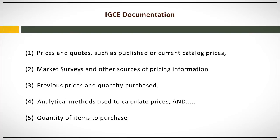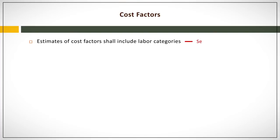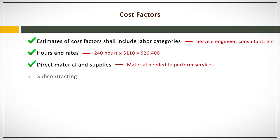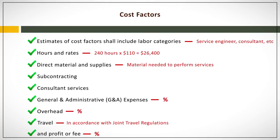IGCEs at cost level provide a breakdown of all costs anticipated in the performance of the contract. This should include a breakdown of all cost factors required, including an estimate of labor categories, hours and rates, direct material and supplies, subcontracting, consultant services, general and administrative expenses, overhead, travel, and profit or fee. Support for this information may come from an engineering or requiring activity's bottoms-up estimate anticipating the costs for the requirement, historical cost records for previous and/or similar contracts, and market research on the particular industry.